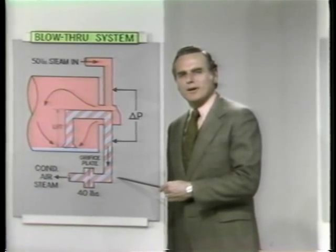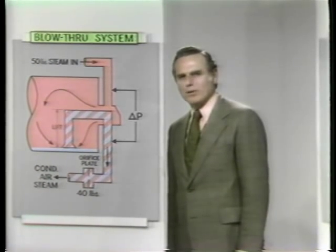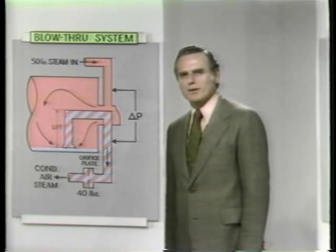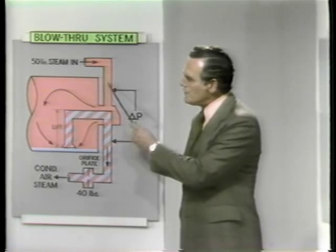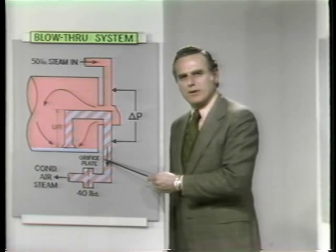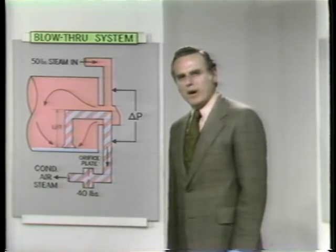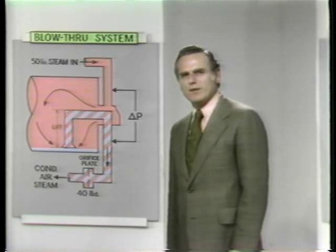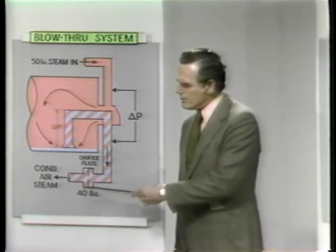The blow-through method was adopted to help alleviate some of the problems of the trap method. Unfortunately, in solving some problems, it ends up with shortcomings of its own. In principle, the blow-through system accomplishes what the steam traps couldn't — creating a positive and continuous flow movement into and out of the dryer steam chamber. Unfortunately, the amount of blow-through steam required to effectively remove the large amounts of condensate and air from the dryers results in the loss of a large amount of live steam.